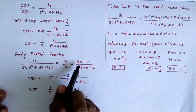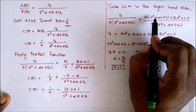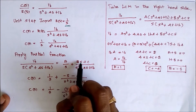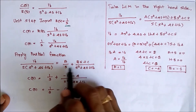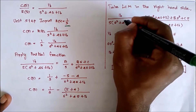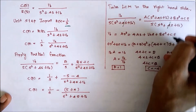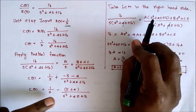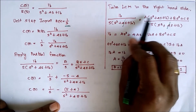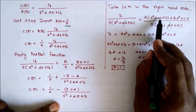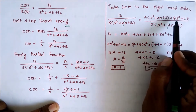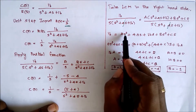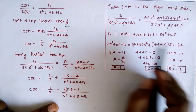Taking LCM, the numerator becomes: A into S squared plus 4S plus 16, then B into S squared plus C into S. The denominators on both sides are the same. Therefore, 16 equals A·(S squared plus 4S plus 16) plus B·S squared plus C·S. Expanding: AS squared plus 4AS plus 16A plus BS squared plus CS. We compare S squared, S, and constant terms on both sides.